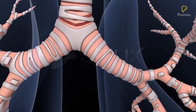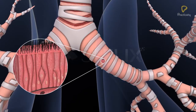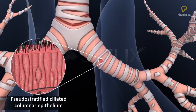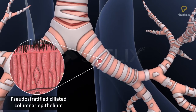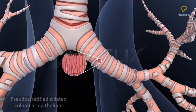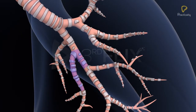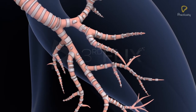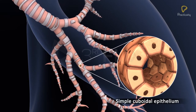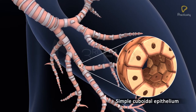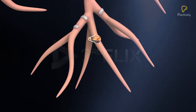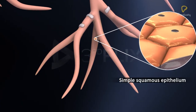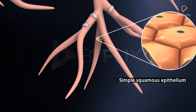The initial bronchi are internally lined with pseudostratified ciliated columnar epithelium. In the smaller branches, the mucous membrane undergoes a gradual transition to simple cuboidal epithelium and finally to simple squamous epithelium from respiratory bronchioles onwards.